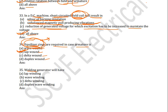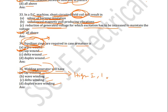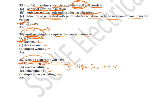Next question: welding generator will have which kind of winding — lap winding, wave winding, delta winding, or duplex winding? The correct answer is lap winding. Welding generators are used for high current applications. Lap winding is generally used for high current and low voltage applications. In lap winding, the number of parallel paths equals the number of poles, so more parallel paths means more current — high current.